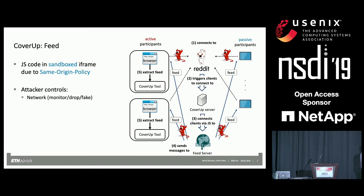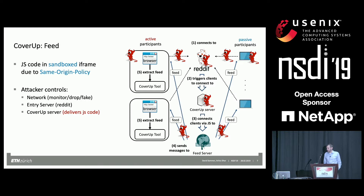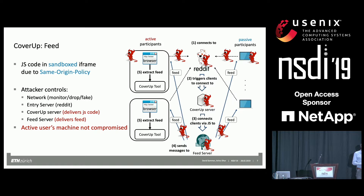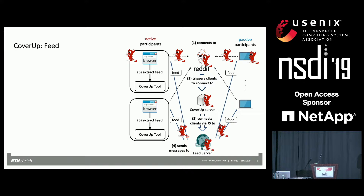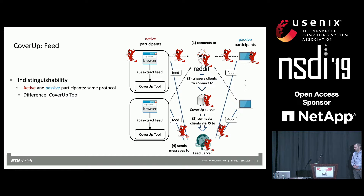For our attacker model, we assume the attacker can monitor and drop network packets and can even fake active and passive participants. It can sit on the entry server (Reddit), the Cover-Up server, and the feed server. The only thing not allowed to be compromised is the user's machine — this makes sense because if the attacker sits on the user's machine, he could anyway see what the user is doing. Because for a network-layer attacker the protocols of passive and active participants are clearly indistinguishable protocol-wise, the only difference being the Cover-Up tool at the active participant's side, this system provides deniability for people who want to visit WikiLeaks.